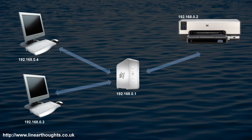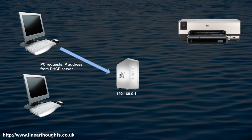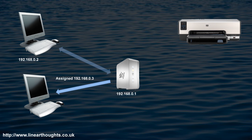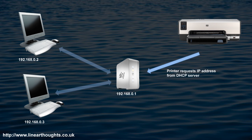If the PC bottom left then added this network printer, the printer would work quite happily and everything would seem fine. The problem arises the next time the network is set up. Say the PC top left is the first unit to join the network, followed by PC bottom left, and then the printer is the third device to join. The devices are assigned different IP addresses this time around.